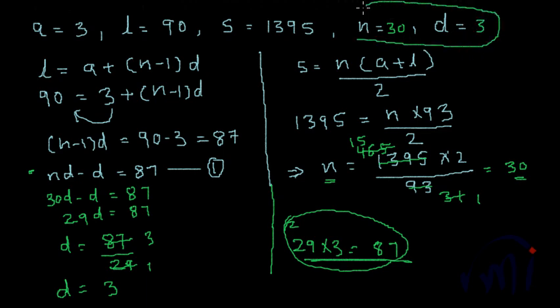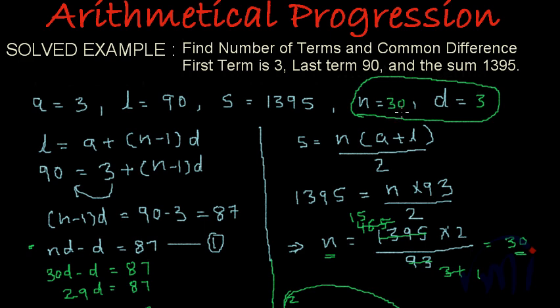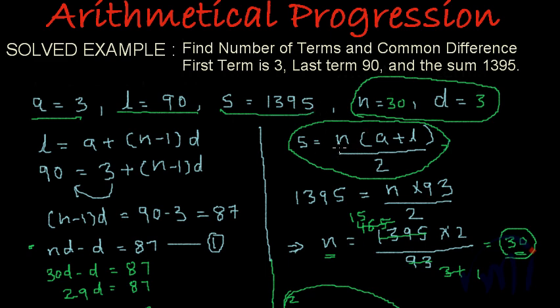So these are the desired results for the problem. What we were supposed to find? We were supposed to find the number of terms and the common difference. Number of terms we could find using the formula of sum, because we were given first term, last term, and the sum. So from here we could find the number of terms, which is n, which we got as 30. And after finding the value of n, if we use the formula of last term, we could find the value of d, which is the common difference.